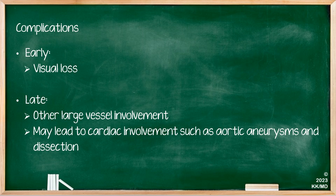The complications of GCA are divided into two groups. Early complications — the most feared — include threat to vision, which can lead to permanent visual loss if GCA is not diagnosed promptly. Late complications include involvement of other large vessels, which can affect the cardiac arteries and result in conditions such as aortic aneurysm and dissection.